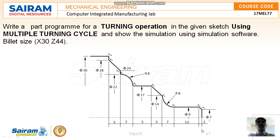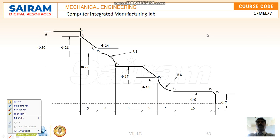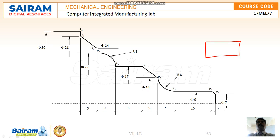The billet size — the raw material size — is X 30 and Z 44 for the maximum length. There is a small taper for 2 mm and then a 10 mm length. Z is the length-controlling axis and X is the diameter-controlling axis. We have to imagine the raw material as 30 mm diameter and 44 mm length, held in a chuck and rotating.